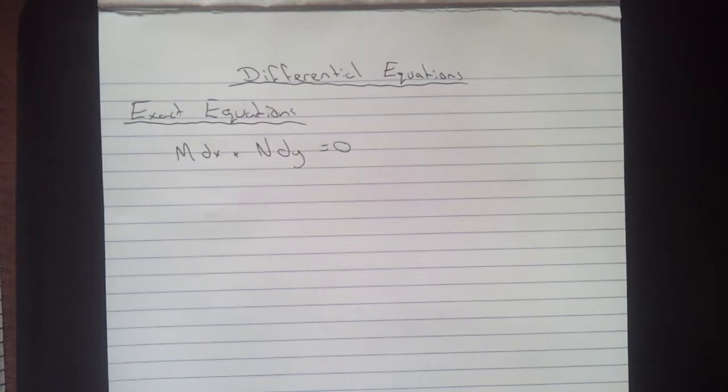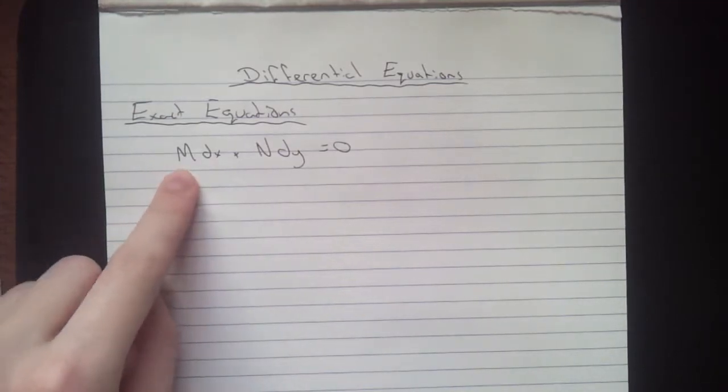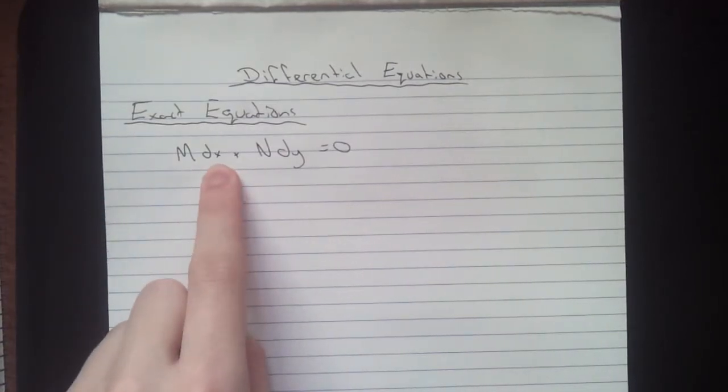So the first thing you want to do is test for exactness. And you do this by taking your M and taking the derivative of it opposite to what's here. So we're going to take ∂M/∂y.